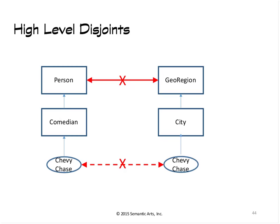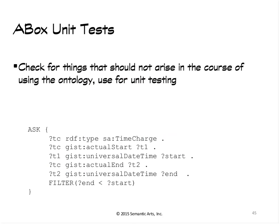For instance, at a very high level you should say things like people and geographic regions — there's no person who's also a geographic region. If you say at the high level they're disjoint, then anything that's a subclass of them is also going to be disjoint. You can know that Chevy Chase the Canadian is not the same as Chevy Chase the city in Maryland, which otherwise you might get confused about — and they would have to have two different URIs if you follow it all the way from the beginning of the talk.